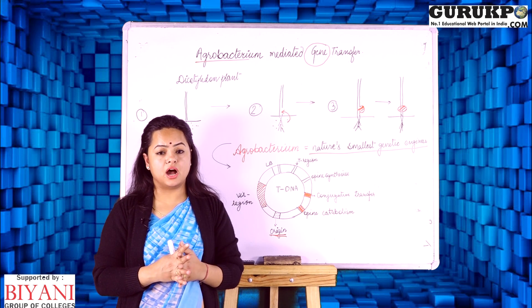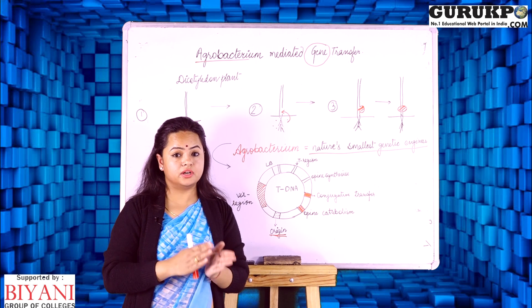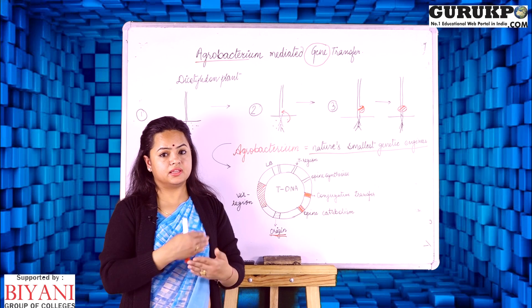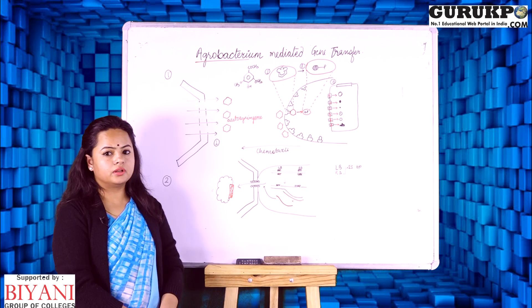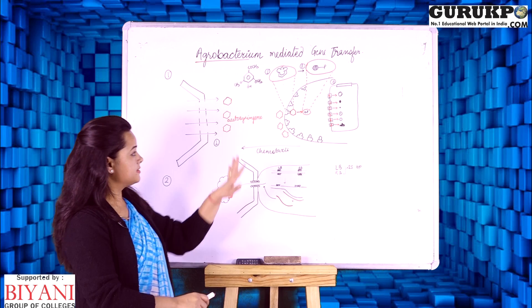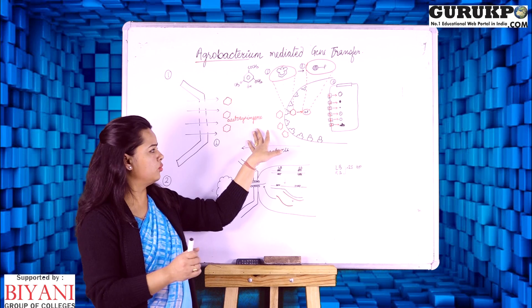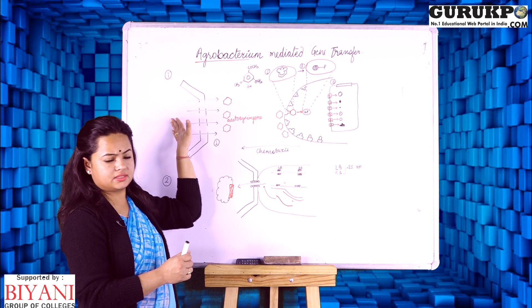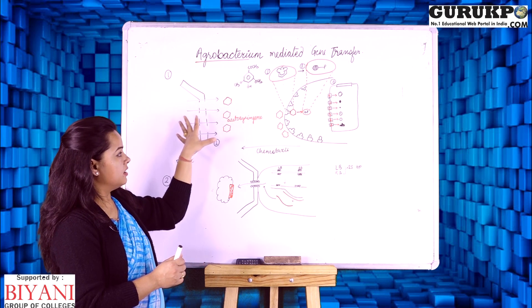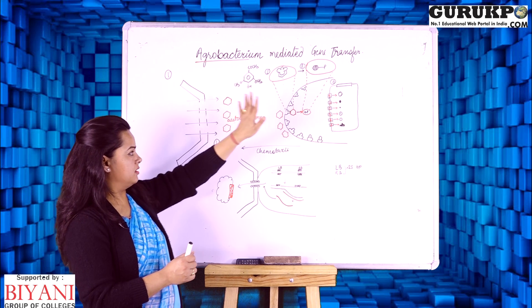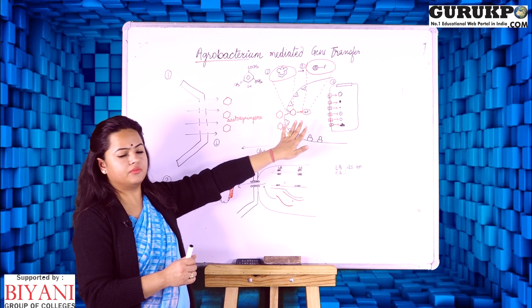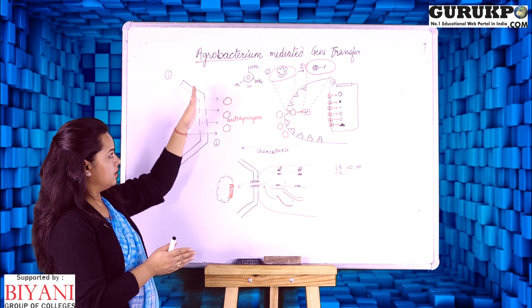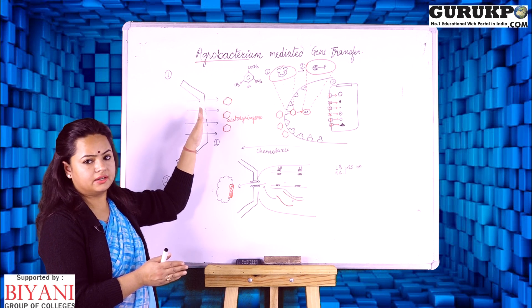So how this Agrobacterium is transferred to the plant system, we will discuss it in this coming diagram. Now we are going to discuss the exact mechanism what is going to happen with a bacterial cell, what is going to happen with a plant cell whenever there is a bacterial cell in the vicinity of a dicotyledonous plant cell. When any wound has occurred it is very common.